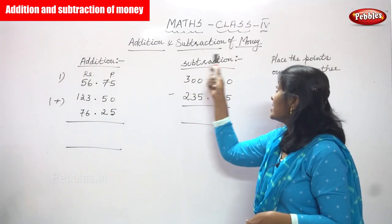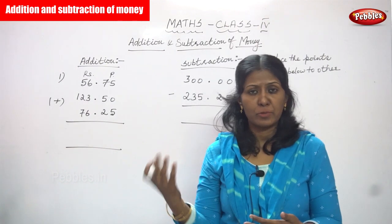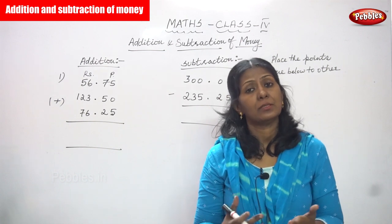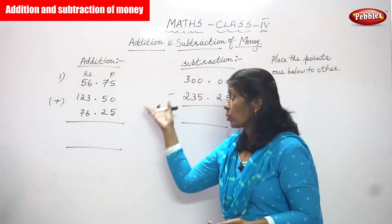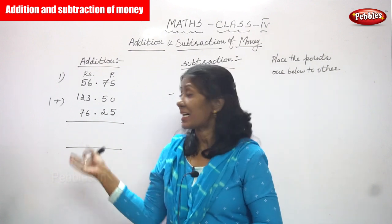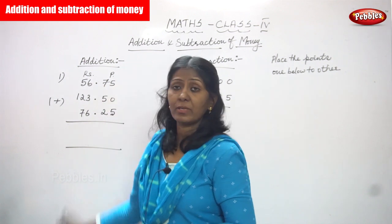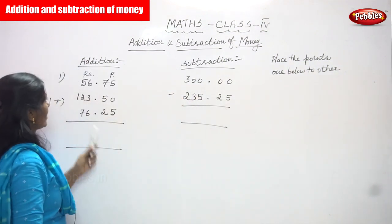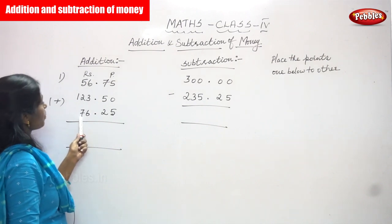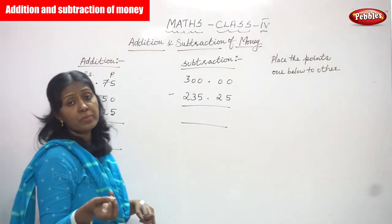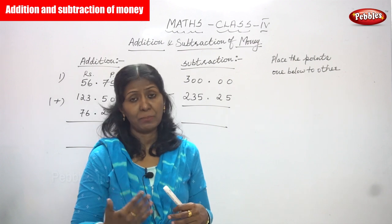Now we are going to see addition and subtraction of money. Money is very essential — generally when we buy something from a shop, we have to pay money for things. We are going to see addition and subtraction of money, that is rupees and paise. We can use addition and subtraction. If you go to malls or shopping malls, wherever you go, you can buy something there.